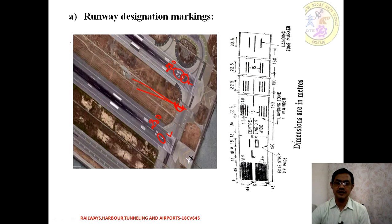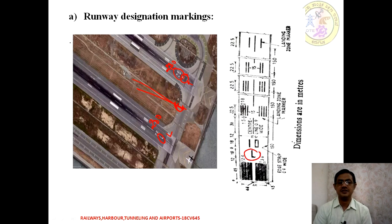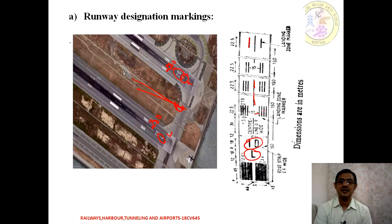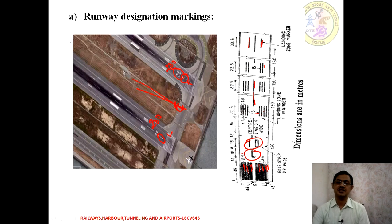Apart from that, there are different markings on the runway. For example, L10 means it is the left runway at 100 degrees clockwise from north. After that, we have the landing zone marking — the centerline — followed by the landing zone marker. The thick white color stripes are called edge stripes.